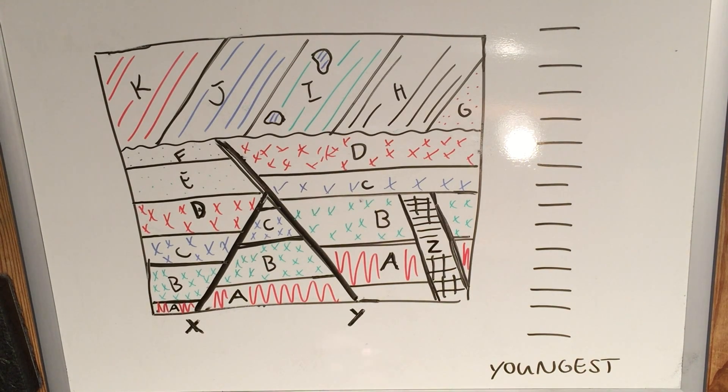Starting with the oldest is pretty easy. We can start basically using the law of superposition and original horizontality. You can say that, well, since layer A down here, you can see it right here, here, and here, broken up by these two faults, but you can ignore that for now and say that, well, since it's at the bottom, B lies directly on top of it.